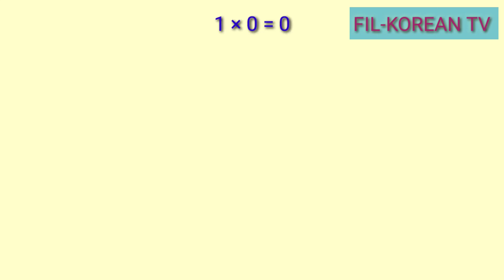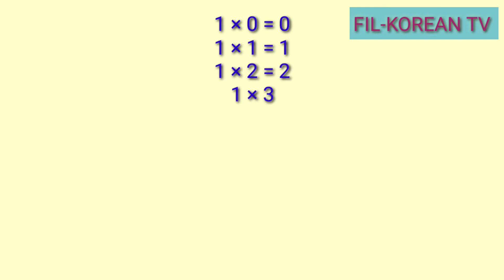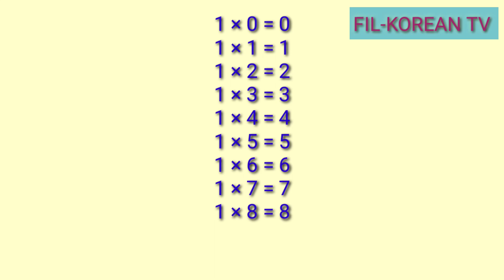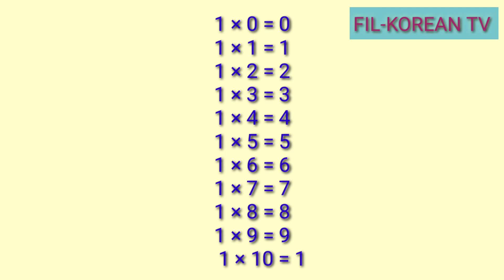We will start from table 1. 1 x 0 equals 0, 1 x 1 equals 1, 1 x 2 equals 2, 1 x 3 equals 3, 1 x 4 equals 4, 1 x 5 equals 5, 1 x 6 equals 6, 1 x 7 equals 7, 1 x 8 equals 8, 1 x 9 equals 9, 1 x 10 equals 10.